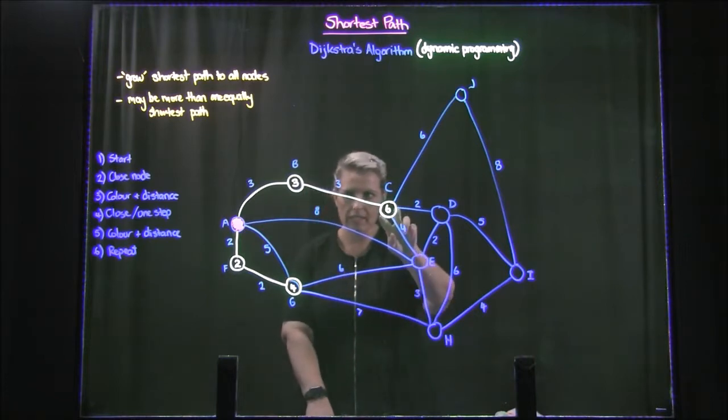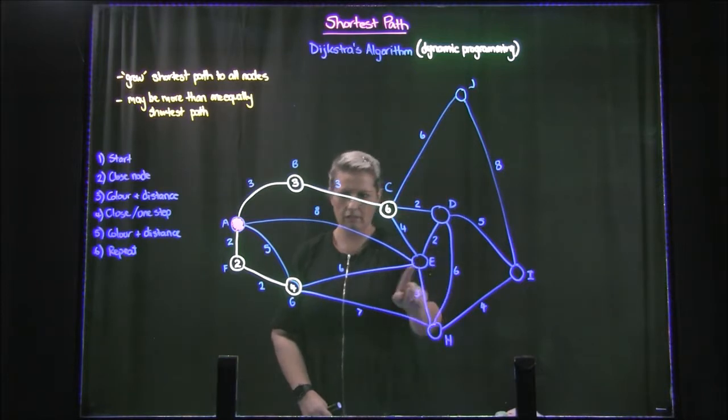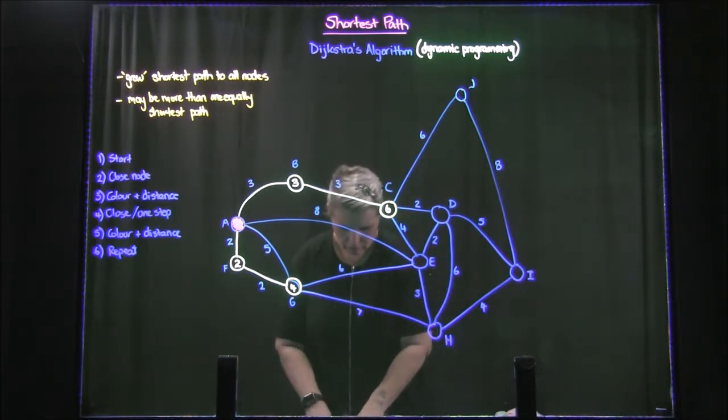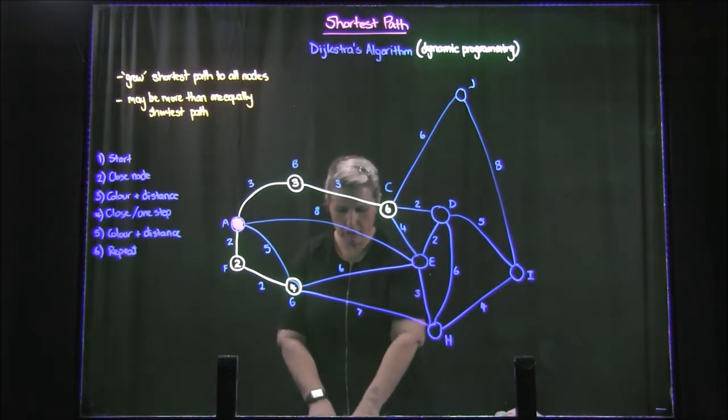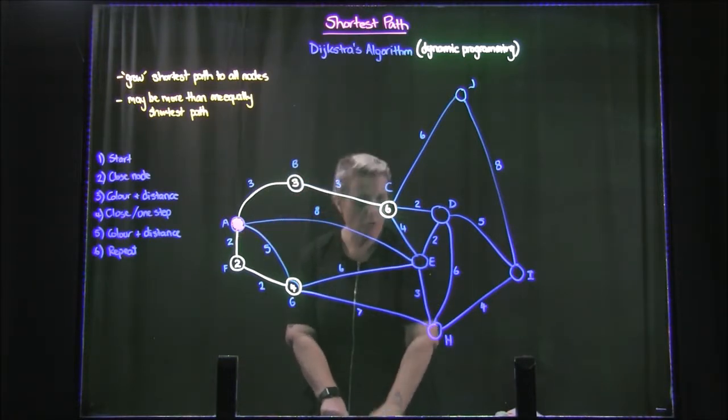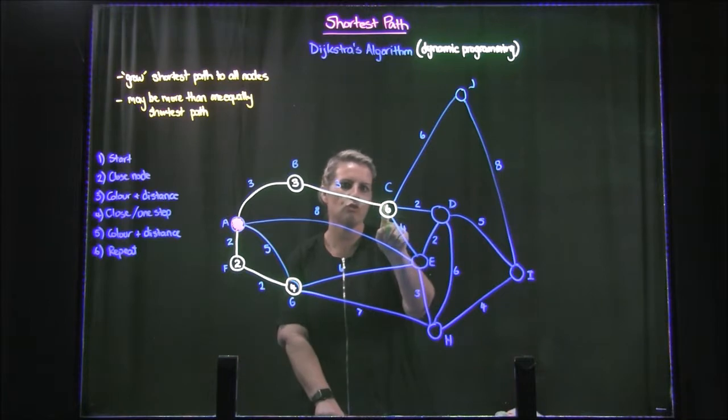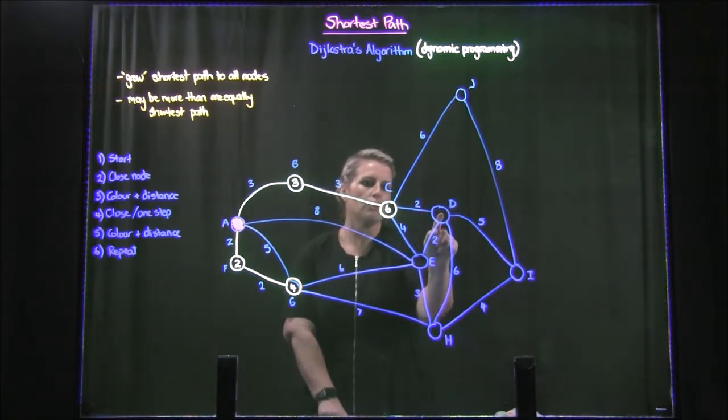So basically, all we're doing is we keep going to what are the nodes that are one step away from the colored nodes, and then having a look at which one is actually the closest, whether it's direct or indirectly through other nodes, which one is the closest to A, so that eventually we actually end up with the shortest path. So now we've got C, our colored nodes are still E, D, J, H. E, H, J, D are all coming from the colored nodes.